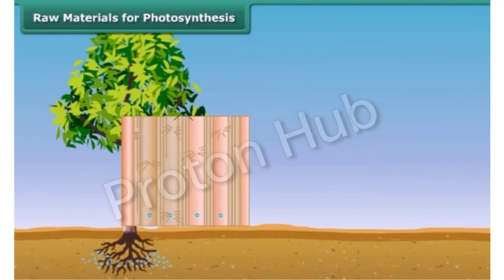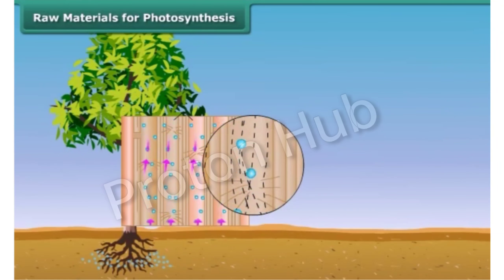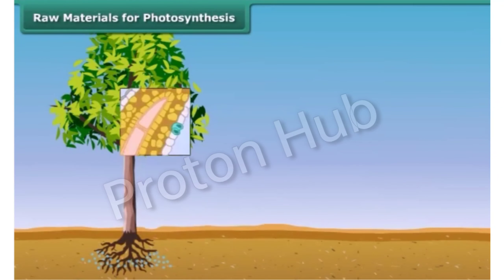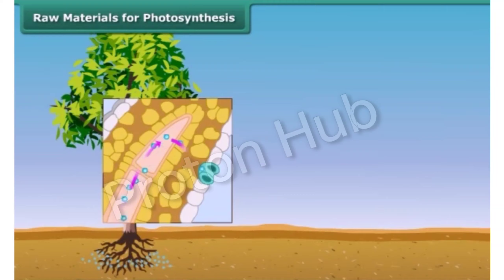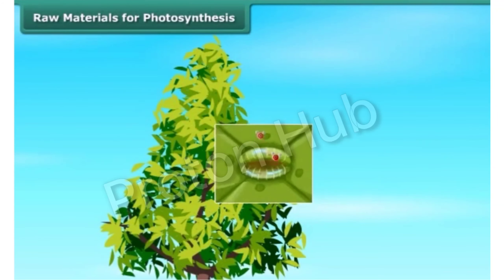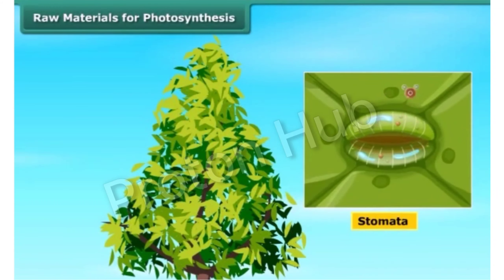These vessels run throughout the root, the stem, the branches, and the leaves, forming a continuous path for water and minerals to reach the leaf. Likewise, carbon dioxide from air is taken in through tiny pores present on both surfaces of the leaves. Such pores are called stomata, and these pores are surrounded by guard cells.